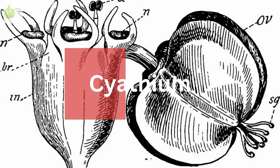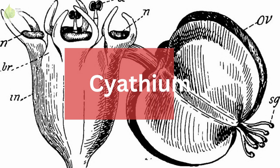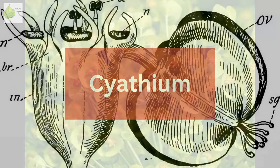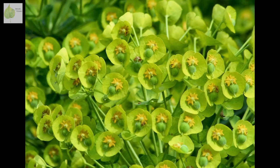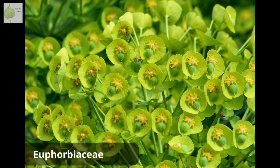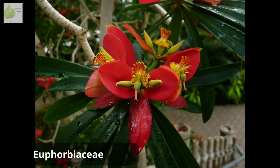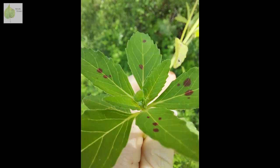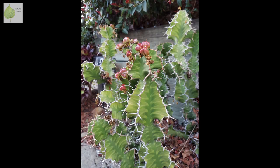Today, I want to talk to you about the cyathium, a type of inflorescence characteristic of the plant family Euphorbiaceae, commonly referred to as Aspergius. With over 7,000 species, this family is quite diverse and includes herbs, shrubs, small trees, succulents, and some that even look like cacti.